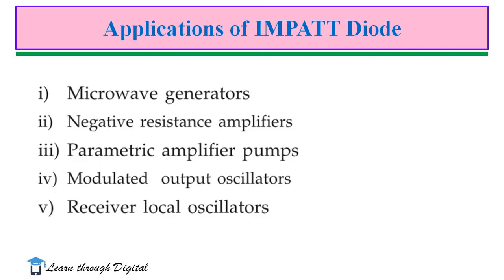Here are some applications of the IMPATT diode. IMPATT diodes are generally used in microwave generators, negative resistance amplifiers, parametric amplifier pumps, modulated output oscillators, and receiver local oscillators. High-Q IMPATT diodes are used in intrusion alarm networks, police radar, and low-power transmitters. Low-Q IMPATT diodes are useful in FM telecommunication transmitters and CW Doppler radar transmitters.